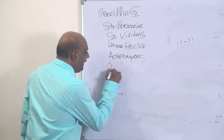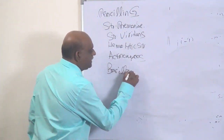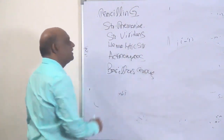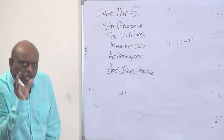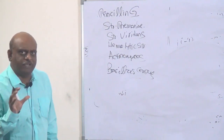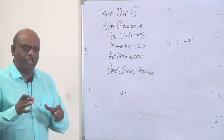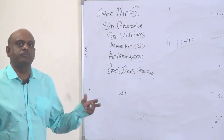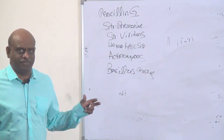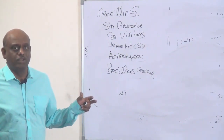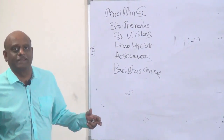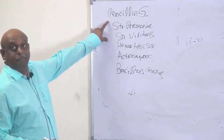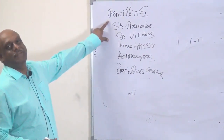Bacillus cereus — very short half-life. Staphylococcus and bacillus cereus have a very short half-life while they cause food poisoning symptoms after you consume food which has a preformed toxin. So, penicillin G is also the drug of choice here.